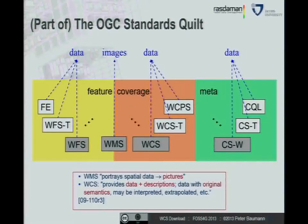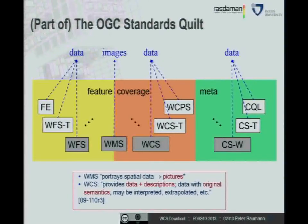Maps are generated not only with vector data but also with raster data, like multispectral satellite imagery, where you have an array of multiband datasets. The first two standards don't deal with that — you get either a map or a feature, but you don't get the actual numbers, the actual band values and their geolocation. For that, we have the coverage standards that I will be speaking about.